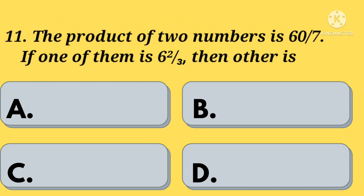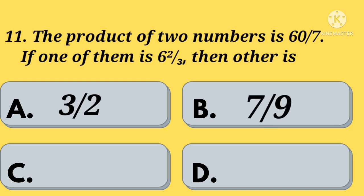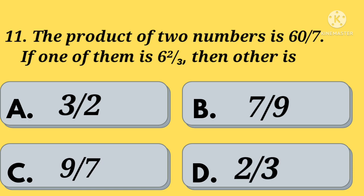The product of 2 numbers is 60 by 7. If one of them is 6 and 2 by 3, then the other is — Option A: 3 by 2. Option B: 7 by 9. Option C: 9 by 7. Option D: 2 by 3. Your time starts now.